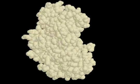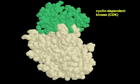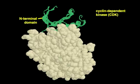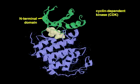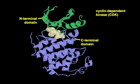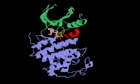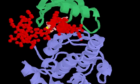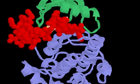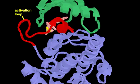Like other kinases, cyclin-dependent kinases, or CDKs for short, are crucial regulatory proteins in the cell cycle. When activated, CDKs transfer phosphate groups from ATP to serine and threonine side chains on targeted substrate proteins. When inactive, the active site of CDKs is sterically occluded by a loop, often referred to as the activation loop.